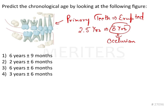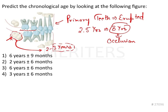Another important thing we can see here is the completion of the crown. The completion of the first permanent molar generally takes 2 to 3 years — by the end of 3 years, the whole crown will be completed. Here we can see the crown is not yet completed and proper occlusion has not been established. That's why the age of this person should be less than 3 years.